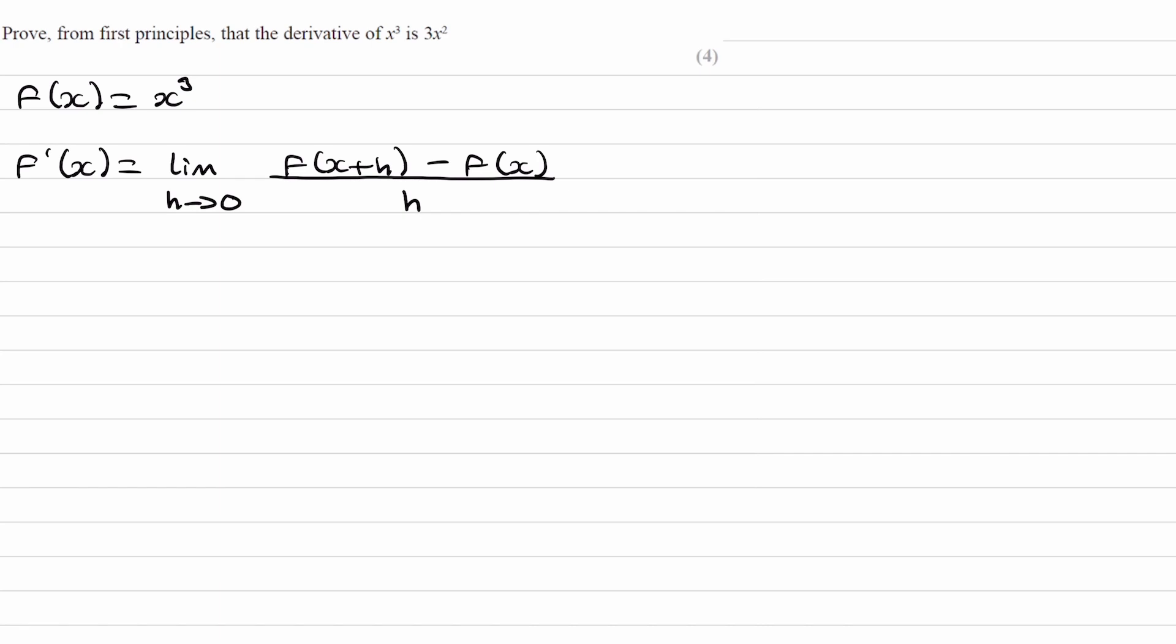Our first step would be to work out what f of x plus h is. Whenever we have something inside these brackets, we replace all of the x's in our original function with whatever is inside this pair of brackets, so x plus h. So it'll become x plus h cubed.